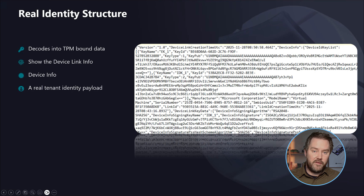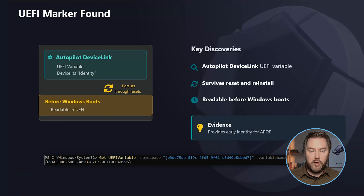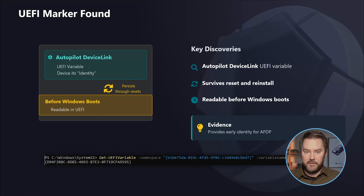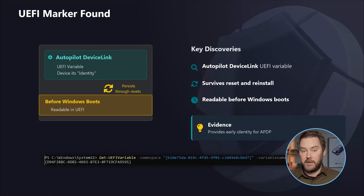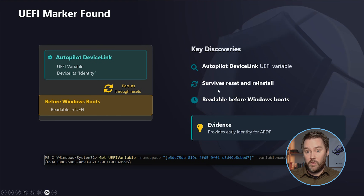At that moment I had a strong suspicion about where Microsoft is going to store this device link marker. So I executed a PowerShell script to check the UEFI variables — the same approach I used to find the autopilot CDD marker used for remediation. Looking at the UEFI, there it was: a new firmware entry called 'Autopilot Device Link' — device association. It was a hidden marker written directly into the UEFI, and it survives a reboot, survives a device reset, and is a marker that can be read by Windows before Windows even loads.